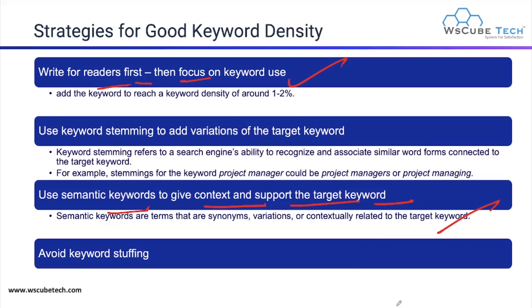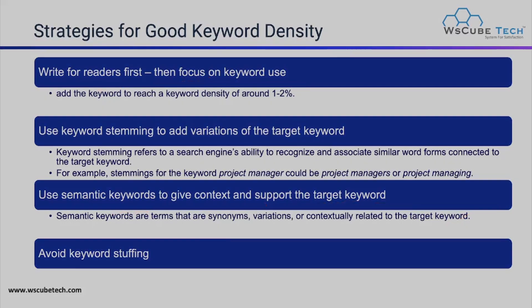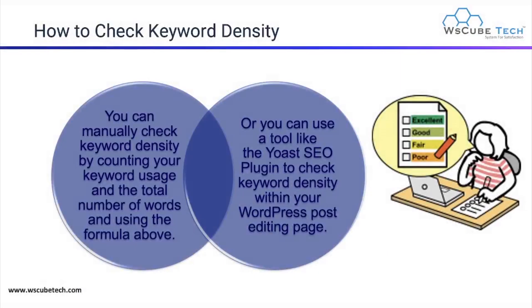Next, use semantic keywords to give context to the targeted keywords. Just as in the example of 'online marketing,' you can use synonyms, variations, and contextual text related to your targeted keywords to avoid keyword stuffing. Maintain your keyword density at 1 to 2% to ensure good keyword density.